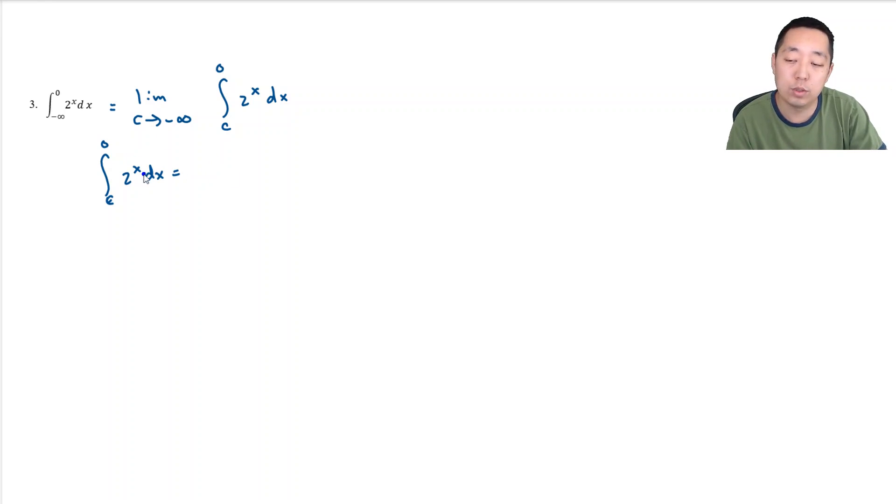Remember the derivative of 2 to the x is just 2 to the x times the natural log of 2. So it's 2 to the x over natural log of 2, evaluated from c to 0. So that's 2 to the 0. I can factor out the 1 over ln of 2 first and make this 2 to the 0 minus 2 to the c. 2 to the 0 is just 1. So this is 1 over ln of 2 of 1 minus 2 to the c.